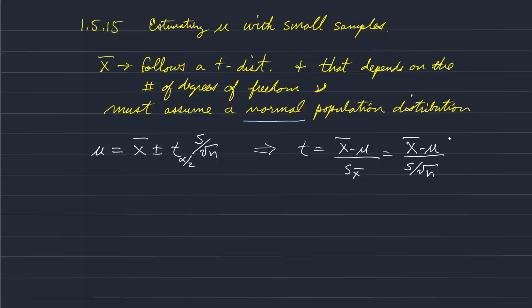So this statistic, this quantity, has degrees of freedom equal to n minus 1. Because we have n, this is our sample, these are the number of measurements, and we have one quantity, x bar, in our definition for t, so we have to subtract 1 from our number of degrees of freedom.